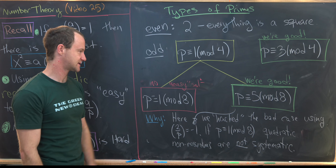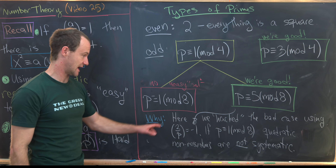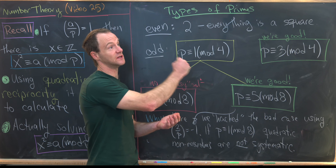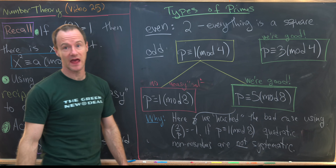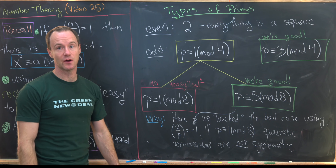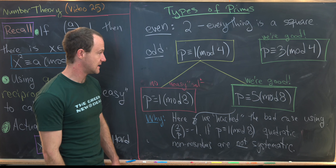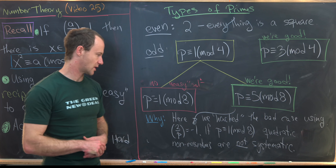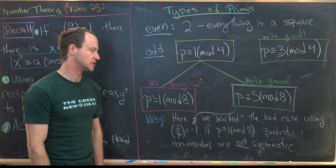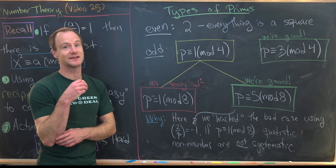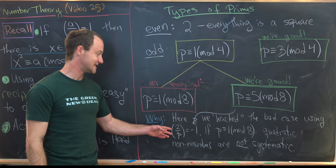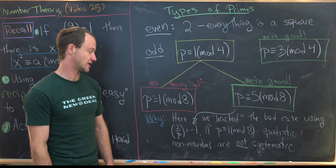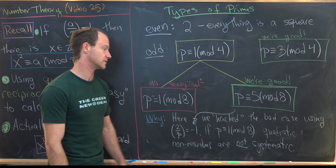For p ≡ 1 mod 8, unfortunately there is no easy solution. In the p ≡ 5 mod 8 case, we were able to handle the bad case using the fact that 2 is a quadratic non-residue mod p — i.e., (2/p) = −1. But if p ≡ 1 mod 8, quadratic non-residues are not systematic, so there's no systematic tool to use.